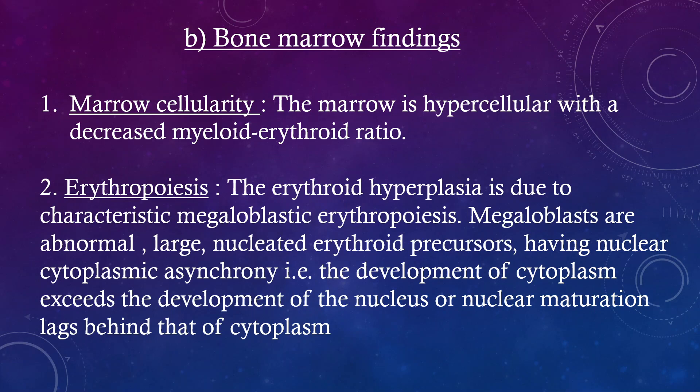Bone marrow findings: Marrow cellularity — the marrow is hypercellular with a decreased myeloid-to-erythroid ratio. Erythropoiesis shows erythroid hyperplasia due to characteristic megaloblastic erythropoiesis. Megaloblasts are abnormal, large, nucleated erythroid precursors having nuclear-cytoplasmic asynchrony — that is, the development of cytoplasm exceeds the development of the nucleus, or nuclear maturation lags behind that of the cytoplasm.